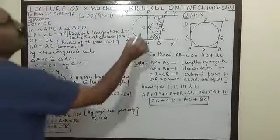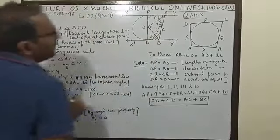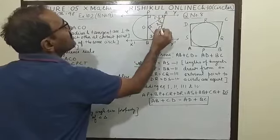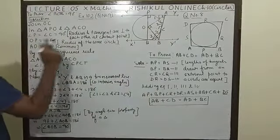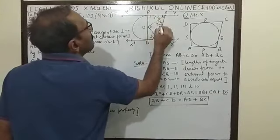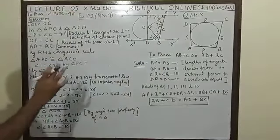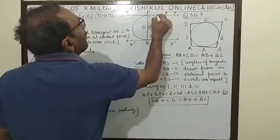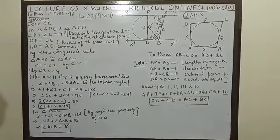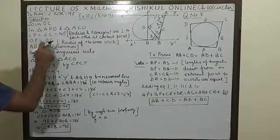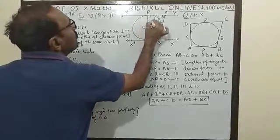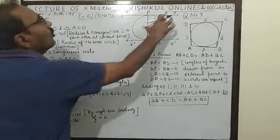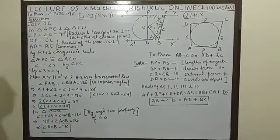Now you see, joint O to C and in triangle APO and ACO. Then angle P equal to C. Angle this P equal to C each 90 degree because you know very well radius and tangent are perpendicular to each other at contact point. And OP equal to OC, radii of the same circle, and OA equal to OA, common.